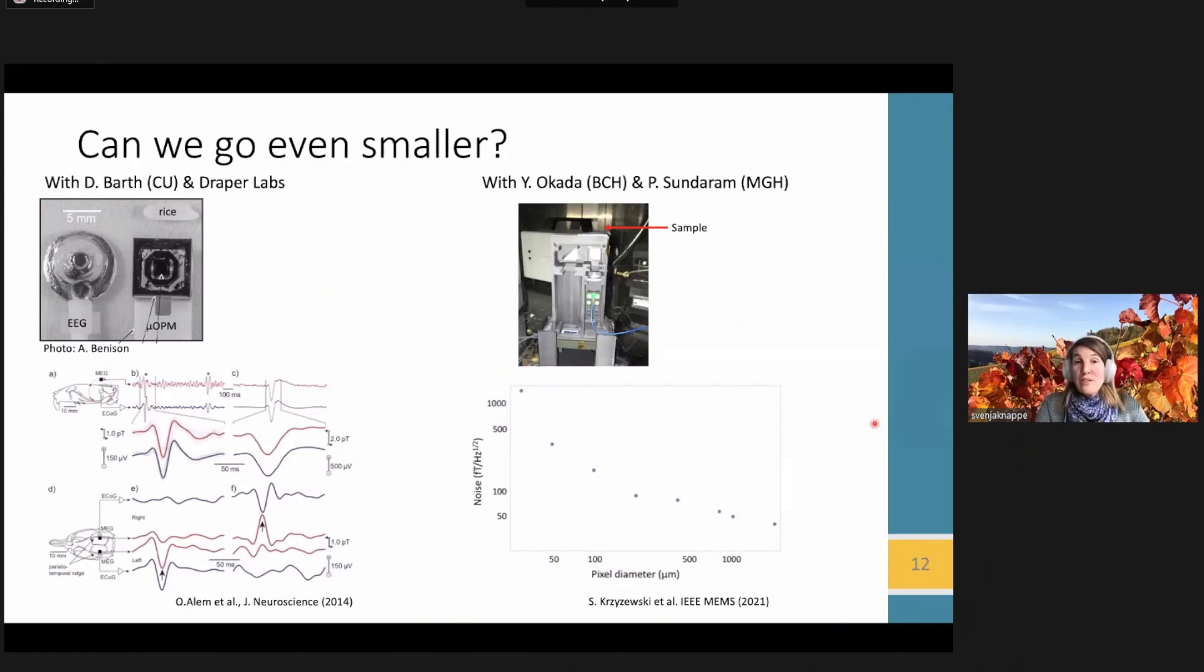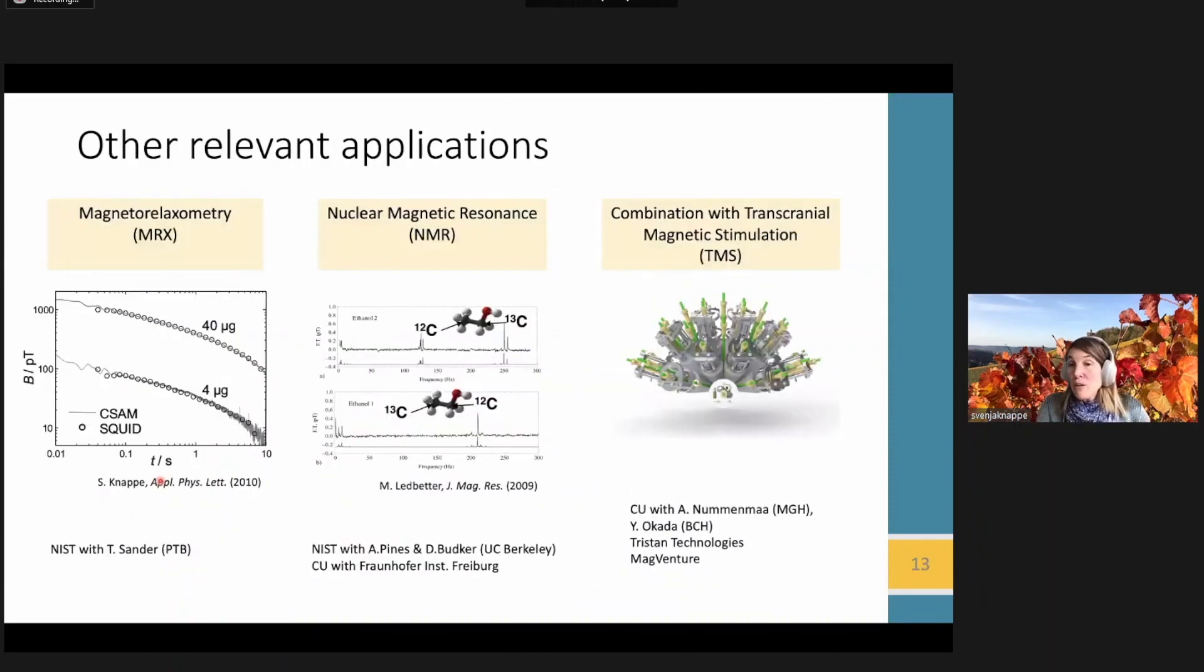To push this technology even further, we can try to go smaller. Here on the left, you can see that we can already make OPMs the size of EEG electrodes, and we've used them to measure epileptiform activity in rats. But we can go even smaller to make pixel sizes of a few tens of microns, and try to make magnetographic cameras that can capture that activity over larger areas. Here are three other applications that could benefit from these sensors. Magnetorelaxometry of functionalized magnetic nanoparticles, nuclear magnetic resonance for chemical analysis or imaging, and then combining these OPMs with other stimulation technologies, such as multi-channel TMS here on the right. And these are other exciting avenues that can really broaden the applicability of these sensors for neuroscience experiments.